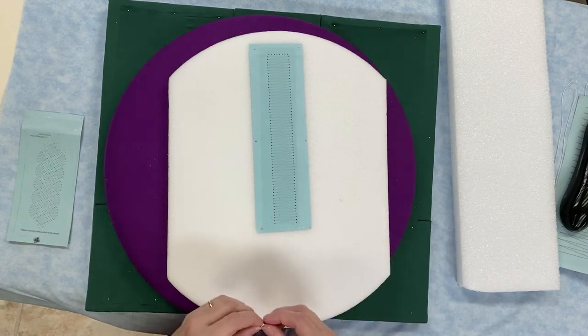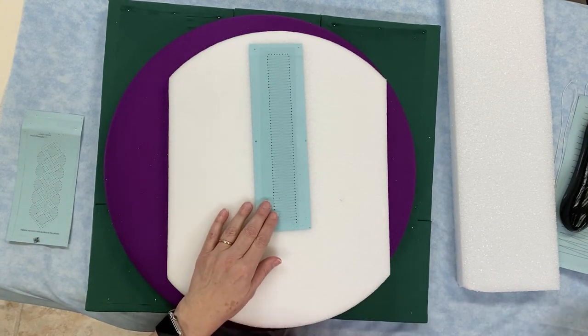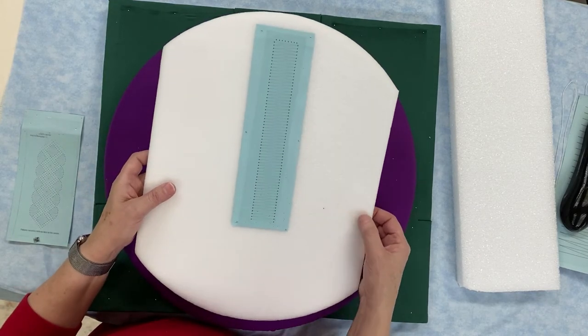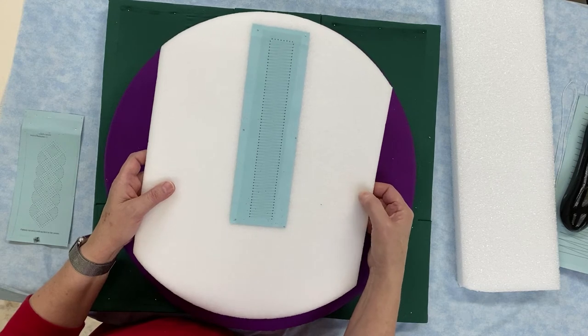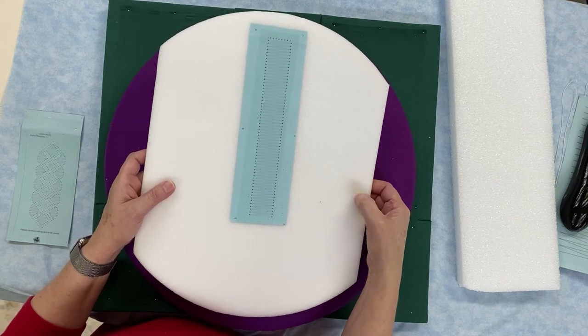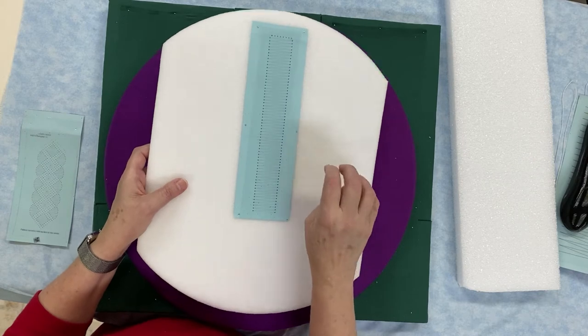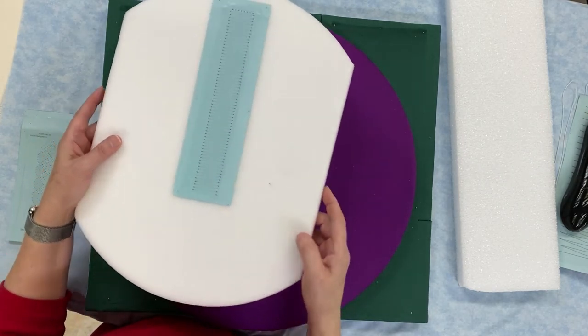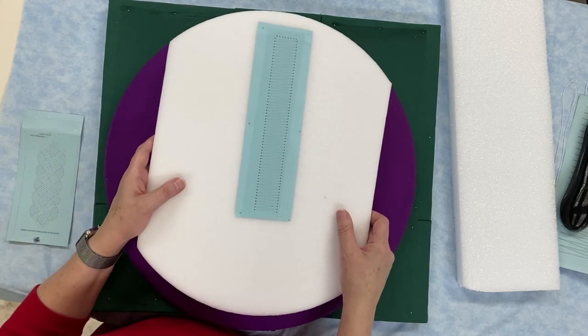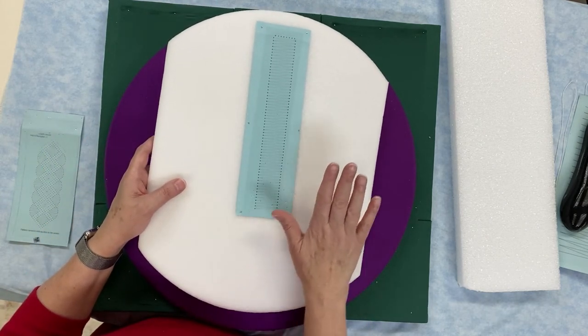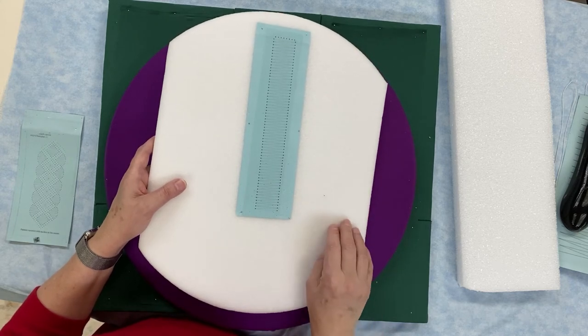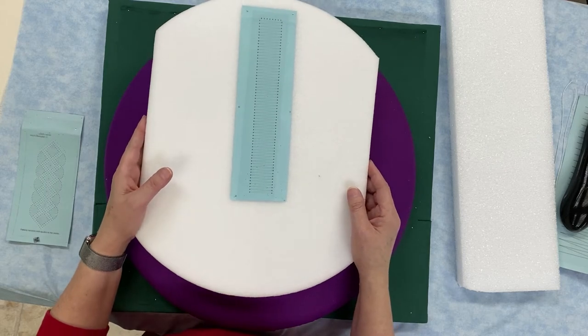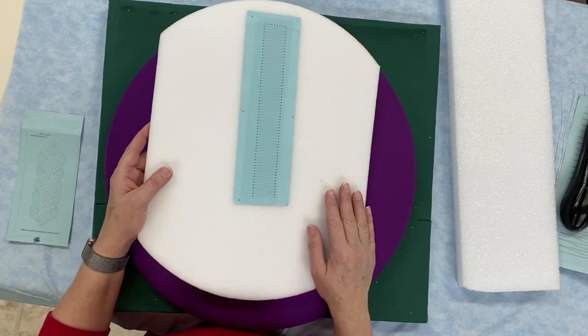This is a Lacy's bobbin lace pillow, L-A-C-I-S. It's made of ether foam. You can see it's quiet when I push on it—it doesn't crackle. It's a little flexible but very firm. The only thing is it's a thin pillow, but they sell this as a beginner kit. It comes with the pillow, a little cardboard stand so you can lean the pillow, and some bobbins. This is a really good place to start.